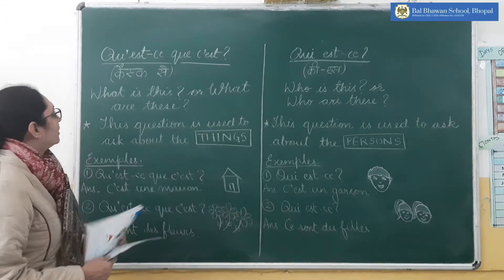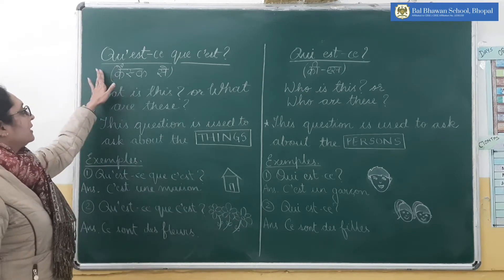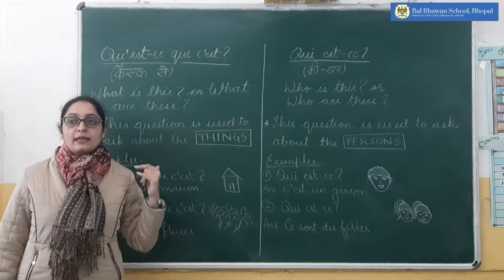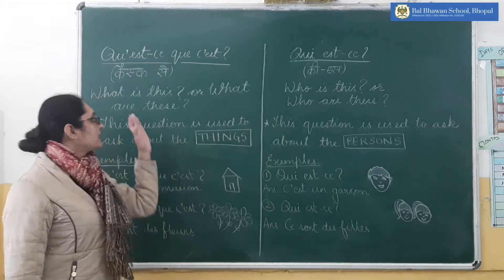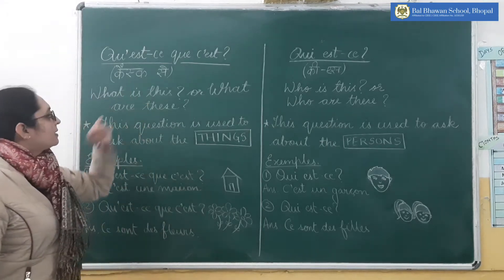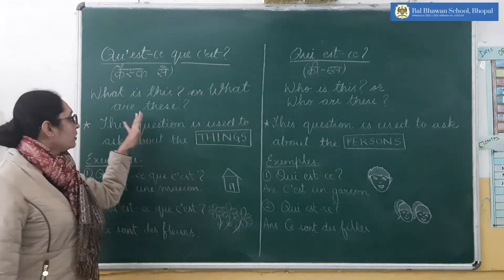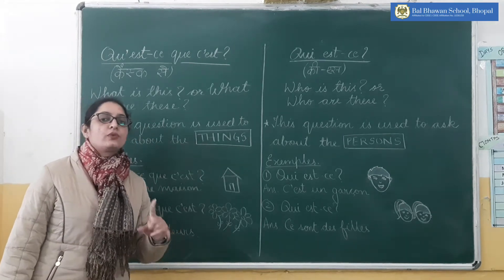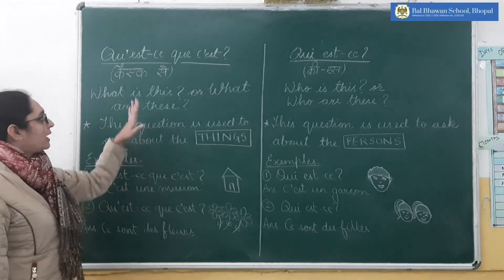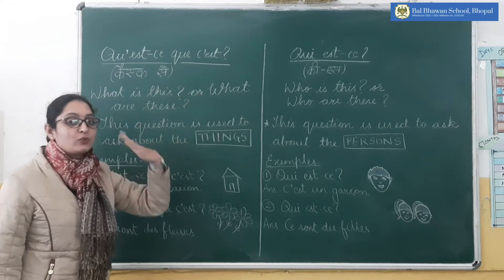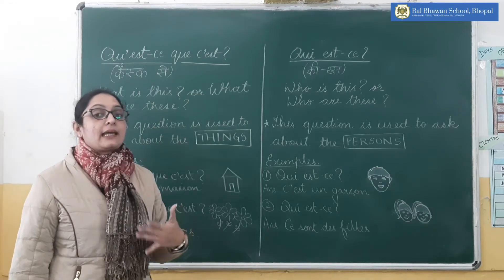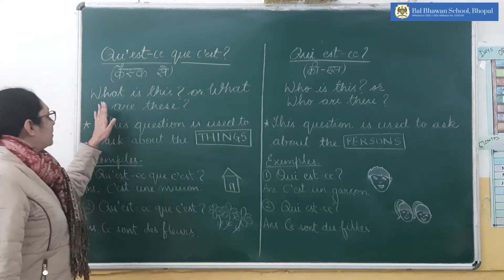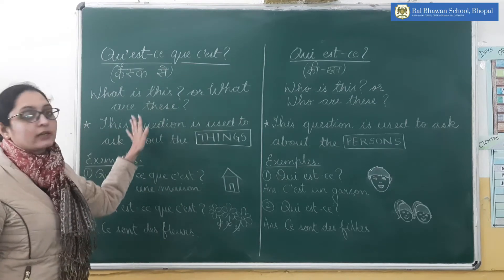Now, how will you do it? That is number 1, the heading is 'Keskse'. What do we say? Keskse. Keskse means 'what is this' and 'what are these'. So for both questions you will use the same thing in French, that is 'keskse'. Repeat with me: Keskse. So keskse means 'what is this' and 'what are these'.